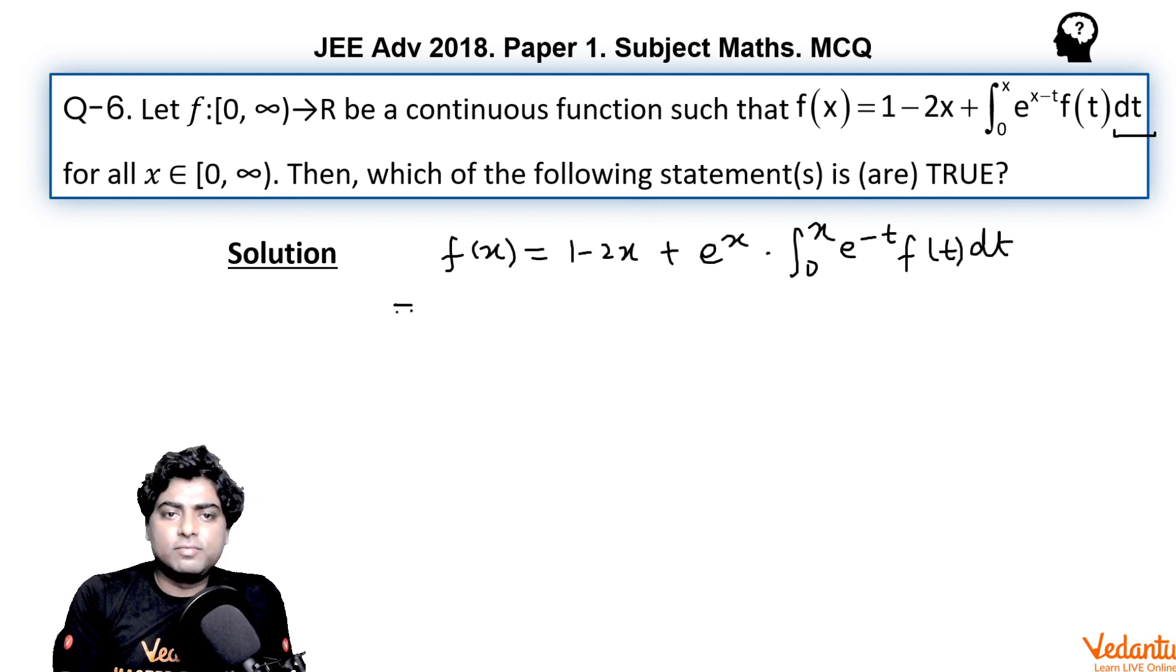Now, if we differentiate it, we will get f'(x) equals -2 plus e^x times differentiation of this integral using Newton-Leibniz rule. We are actually applying product rule, product of two functions of x. First function as it is, second integration differential will be e^(-x) f(x), isn't it?